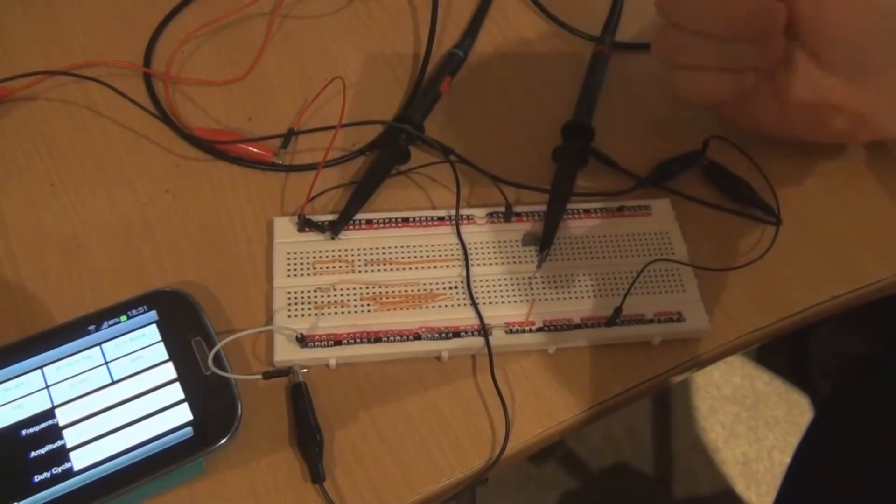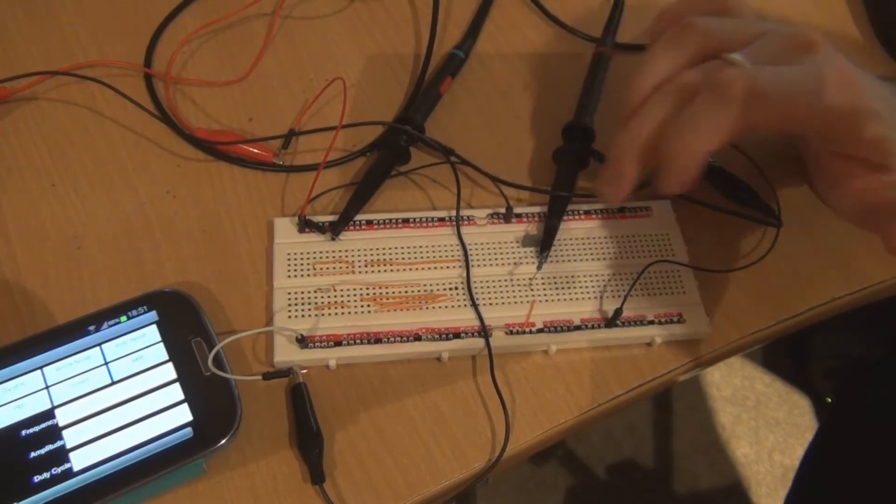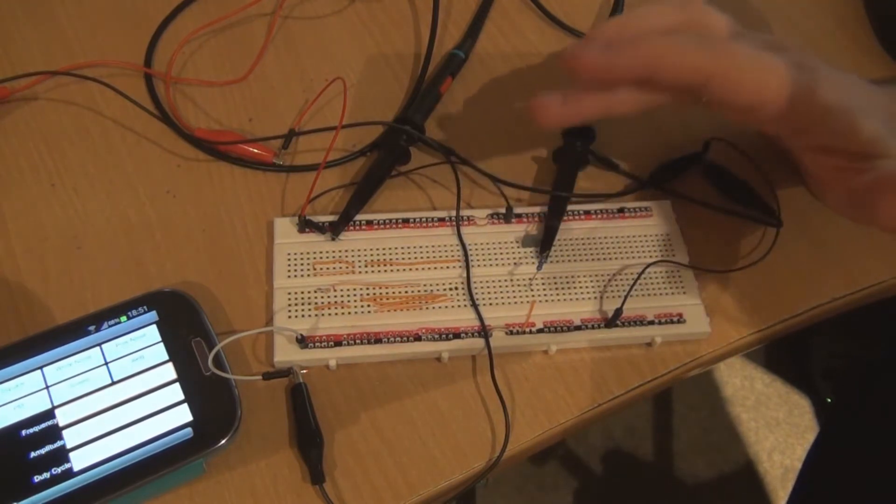So I'll just show you how I've got the circuit set up first. So this is the circuit. It's very straightforward. Just a 10k resistor to ground and a 100nF capacitor on the input.